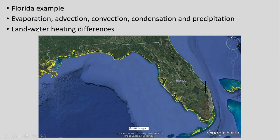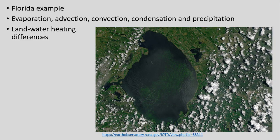We have a lot of evaporation occurring off those warm waters, and then advection with winds moving that very warm and moist air — with a lot of water vapor — over the peninsula. Because of land-water heating differences, the sun heats the land much quicker than water during the day, giving us air much warmer than its surroundings that will rise in convective cells. That air, laden with moisture, rises quickly, leading to condensation and precipitation. A NASA satellite example shows the many convective pop-up thunderstorms that are very frequent in Florida afternoons throughout much of the year.